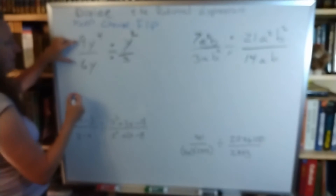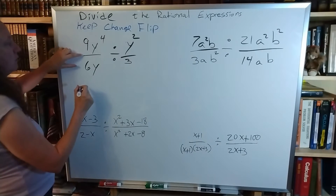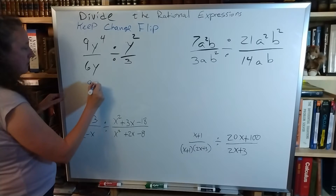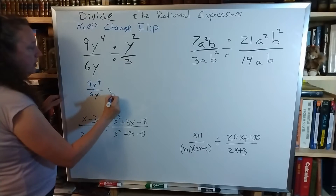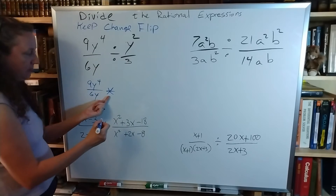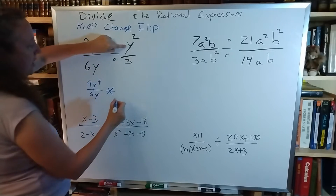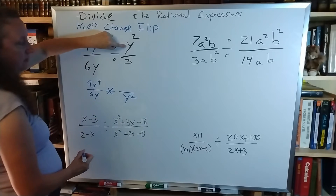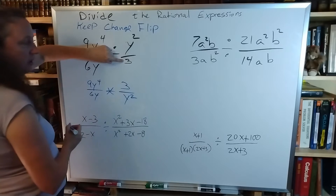So we're going to keep this as 9y to the 4 over 6y. We are going to change divide by to multiply, and we are going to flip this — so the y squared is going on the bottom and the 3 is going on the top.